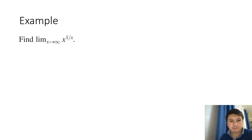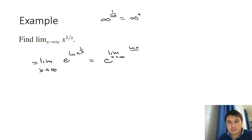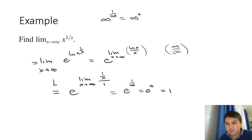Another example: lim x→∞ of x^(1/x). As x→∞ this is ∞^0, an indeterminate form. We write it as e^(ln x / x). As x→∞ this is ∞/∞, so we apply L'Hôpital: derivative of ln x is 1/x, derivative of x is 1. So the exponent becomes 1/x → 0 as x→∞. Therefore the limit is e^0 = 1.